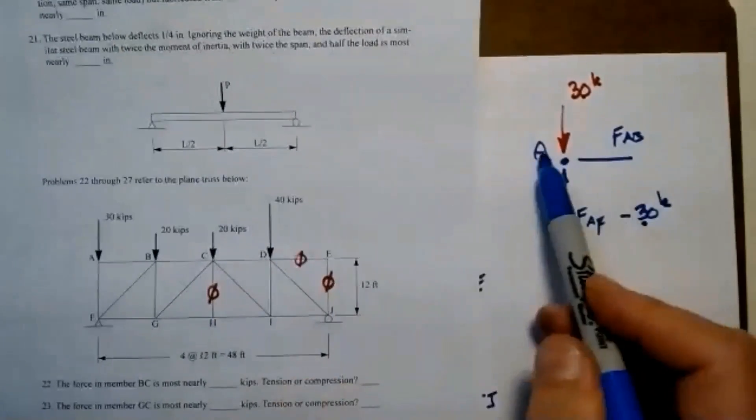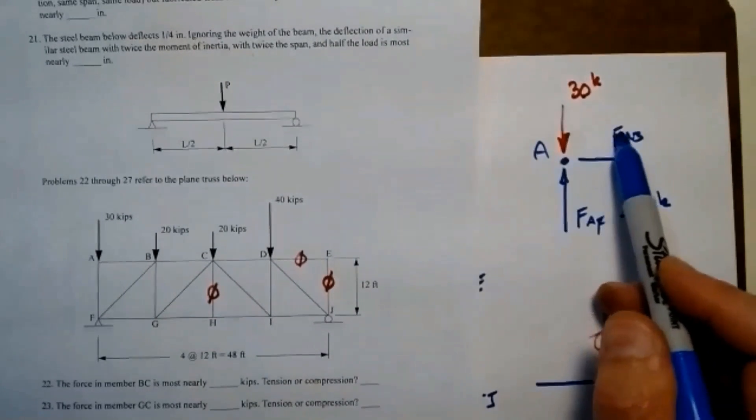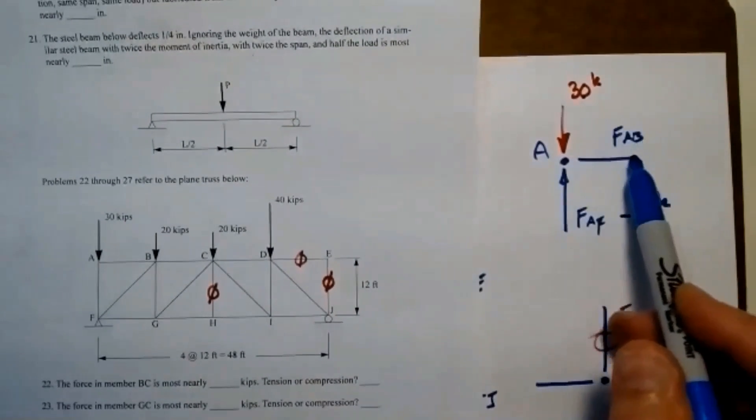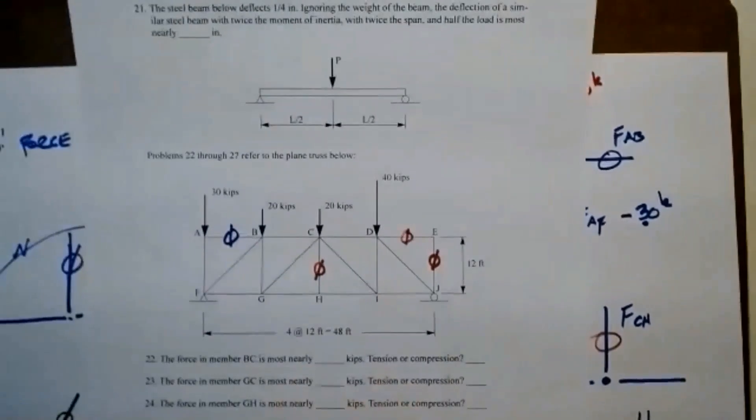But if I sum forces in the X, there are no applied loads in the X direction. And so there's nothing for this force to do. So FAB is zero as well.